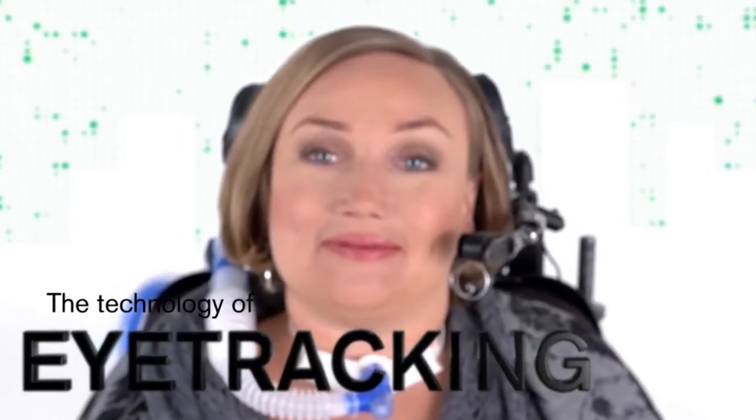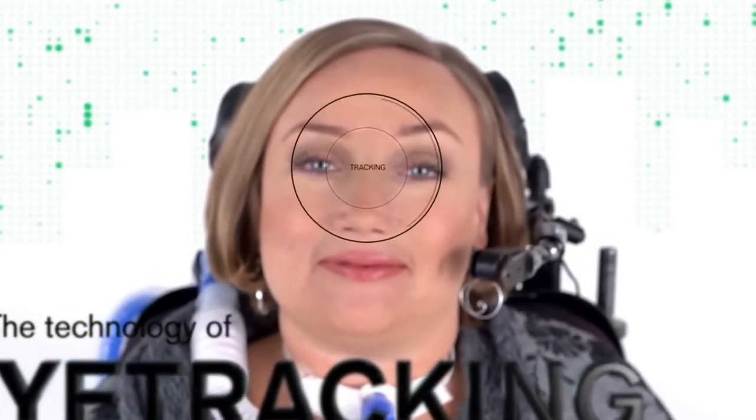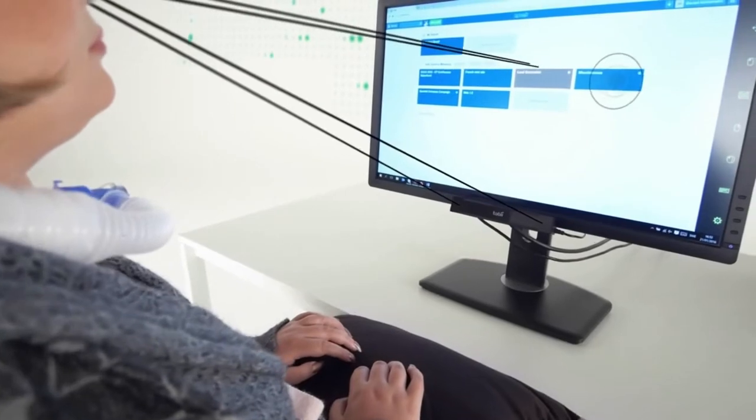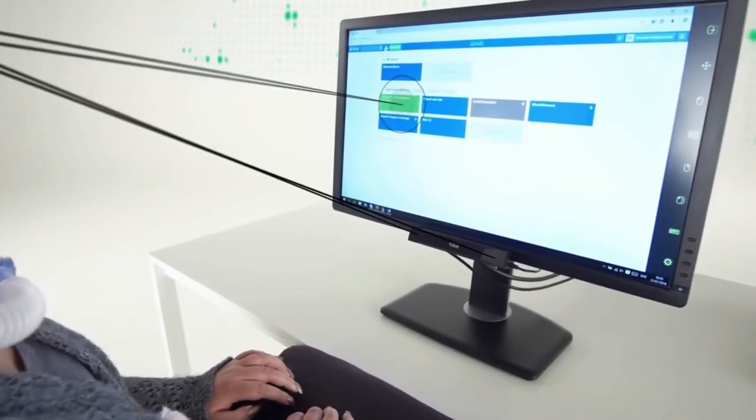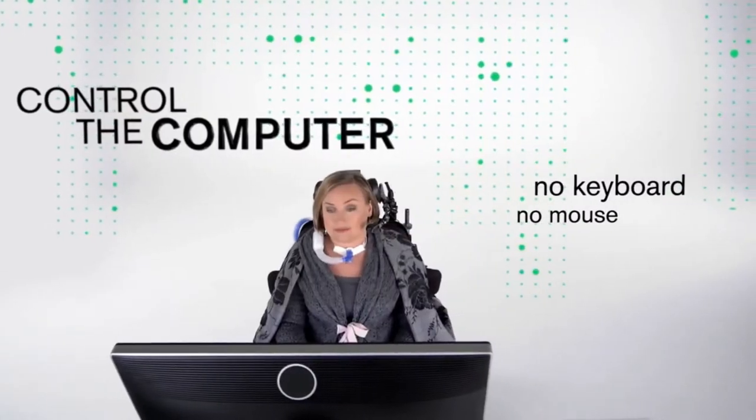Eye tracking is a technology that is used to see where a person is looking on a computer screen. The technology can also be used to control the computer. Instead of using a traditional keyboard and mouse, you control it by using your eyes.